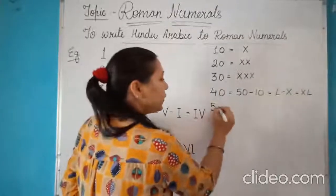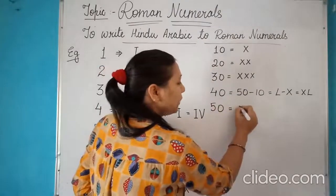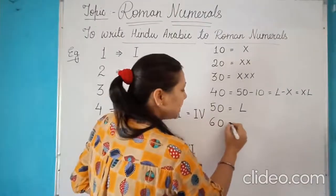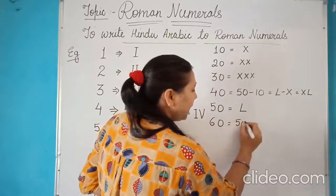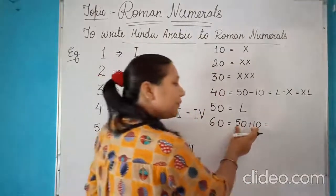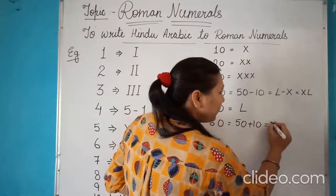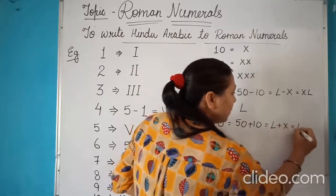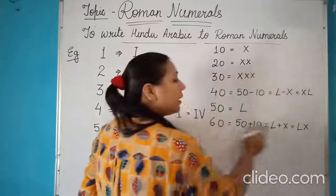Next is your 50 and the symbol for this is simple L. Next value, 60 and 60 is 50 plus 10. Now we will do the addition rule. So that is L plus X and this will become LX, the symbol for 60.